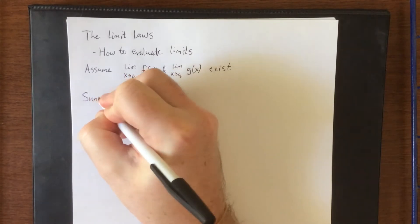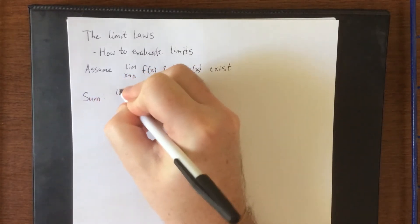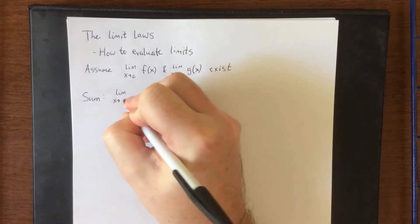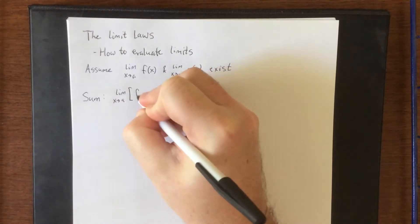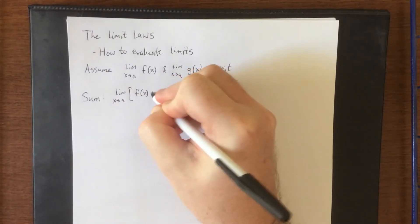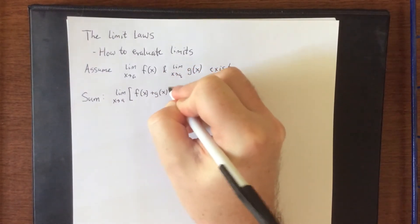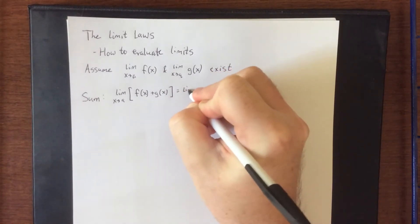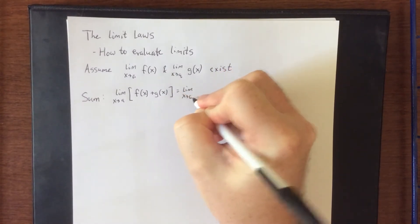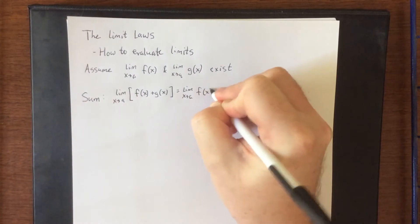So for example, the sum law. If I'm taking the limit as x approaches a of a sum of two quantities, f of x plus g of x, then I can take their individual limits and then add those together.